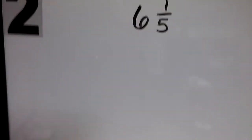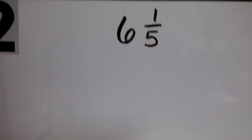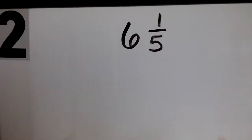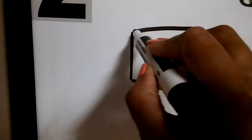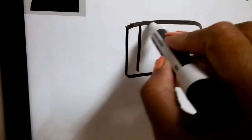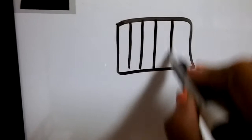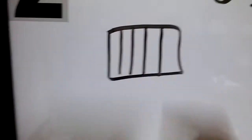We're going to learn how to model six and one-fifth. You must understand that the denominator tells you how many parts are in each whole. So we need to draw a figure showing five parts.